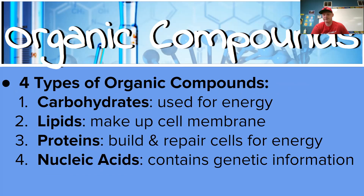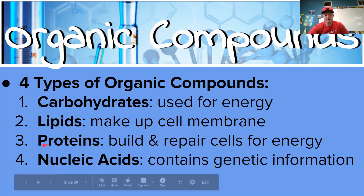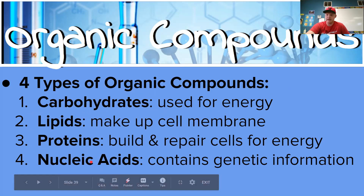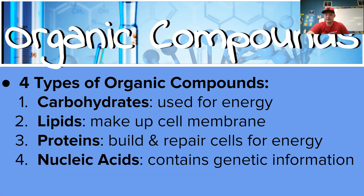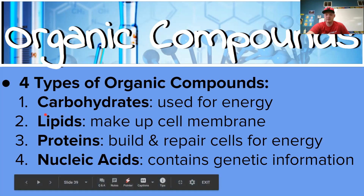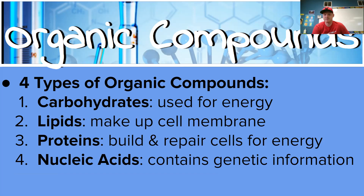So we have four different types of organic compounds. We have a carbohydrate, which is used for energy. We have a lipid, which makes up the cell membrane. We have proteins, which build and repair cells and provide energy. And then we have nucleic acids, which contain genetic information. I'm going to have a slide for each one. Pause here to write down the four different types.